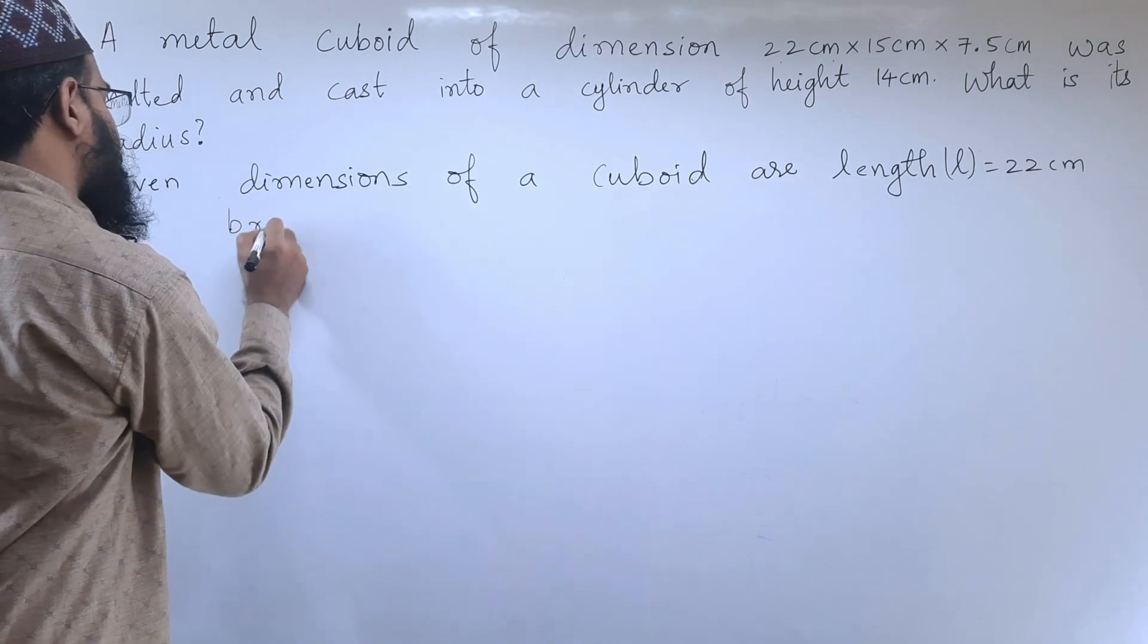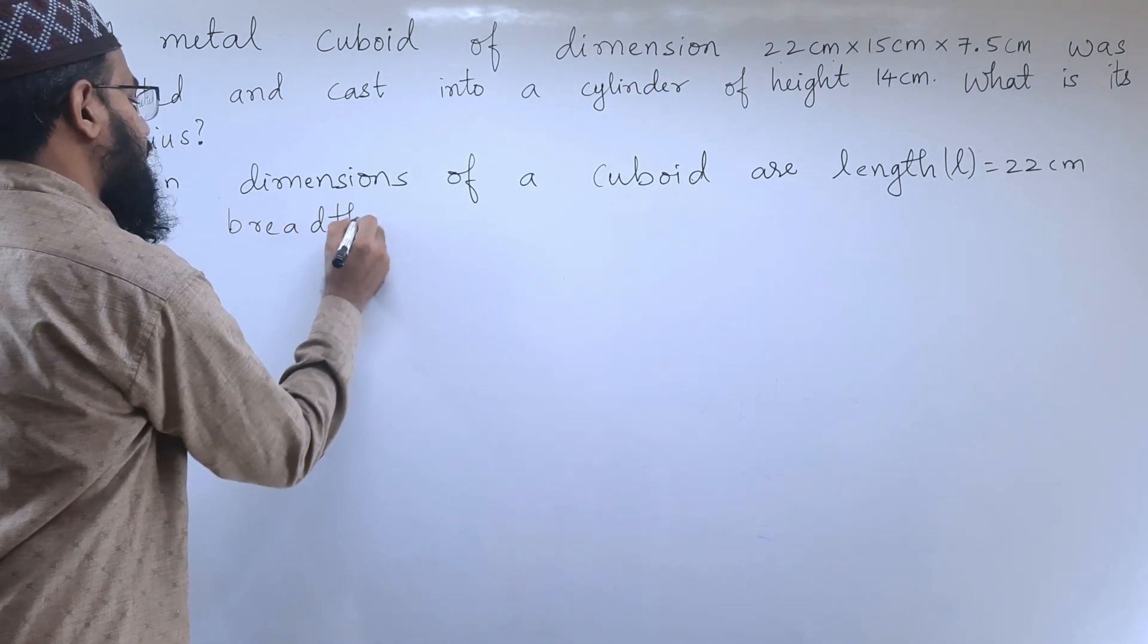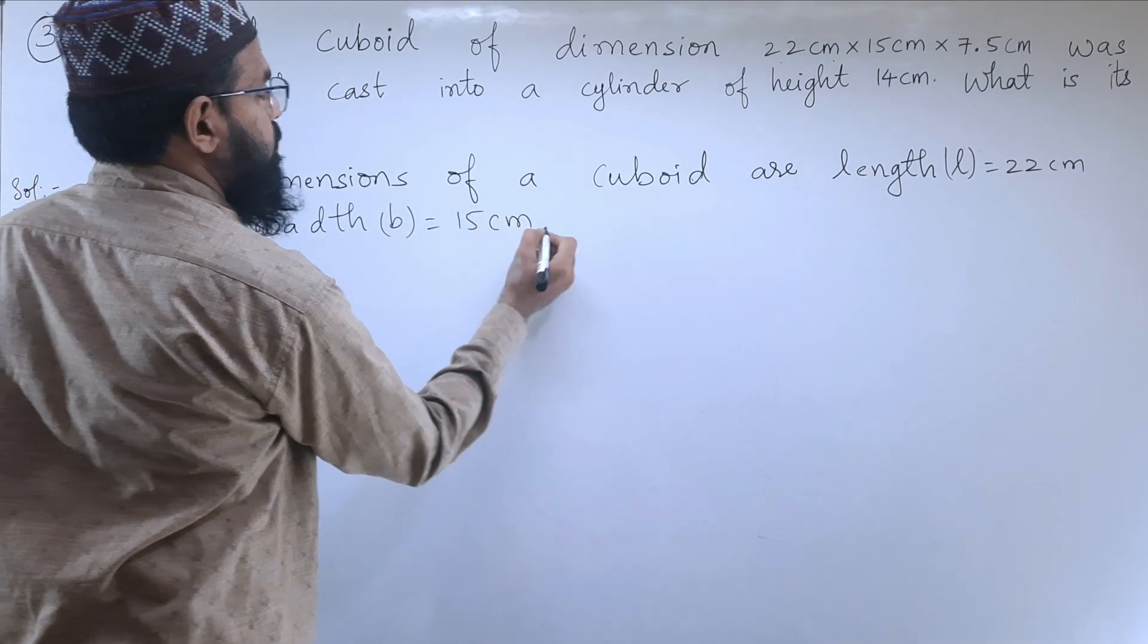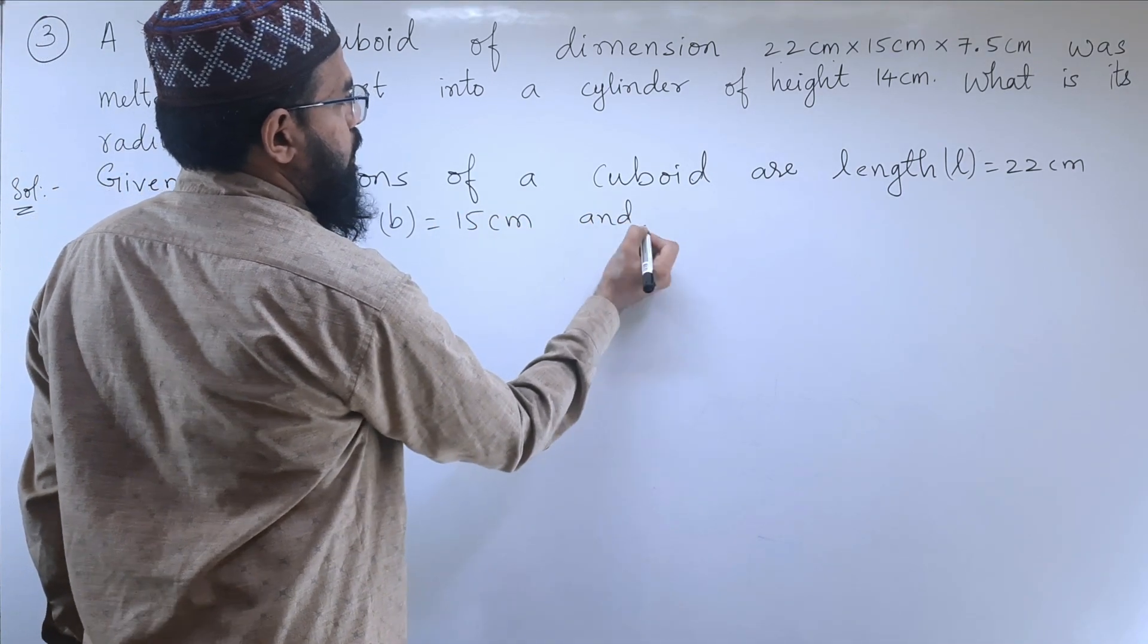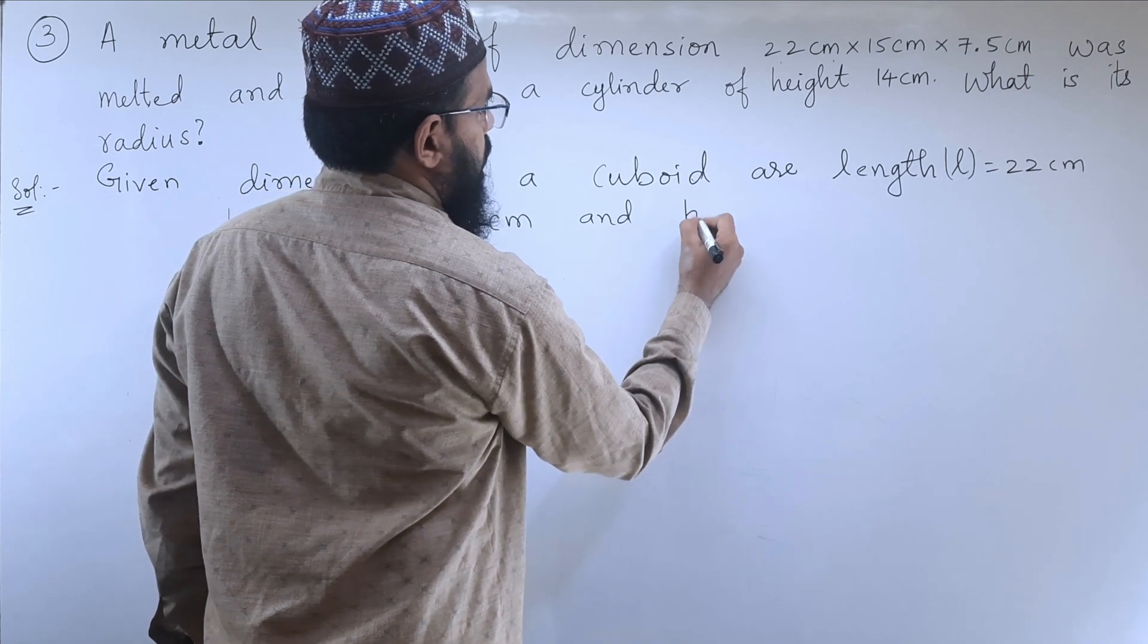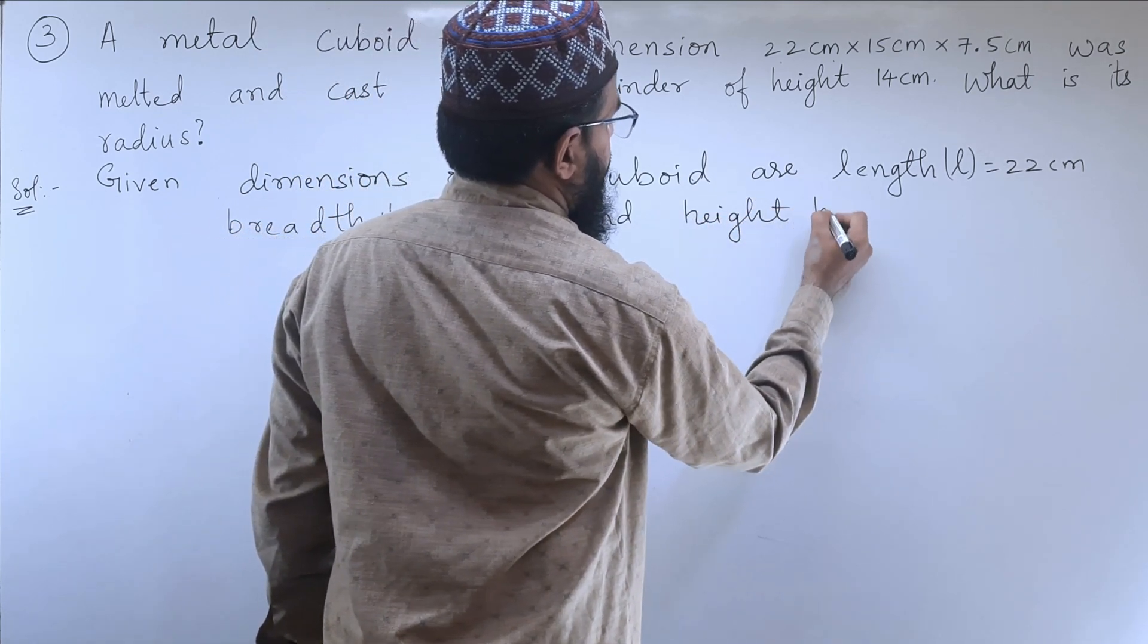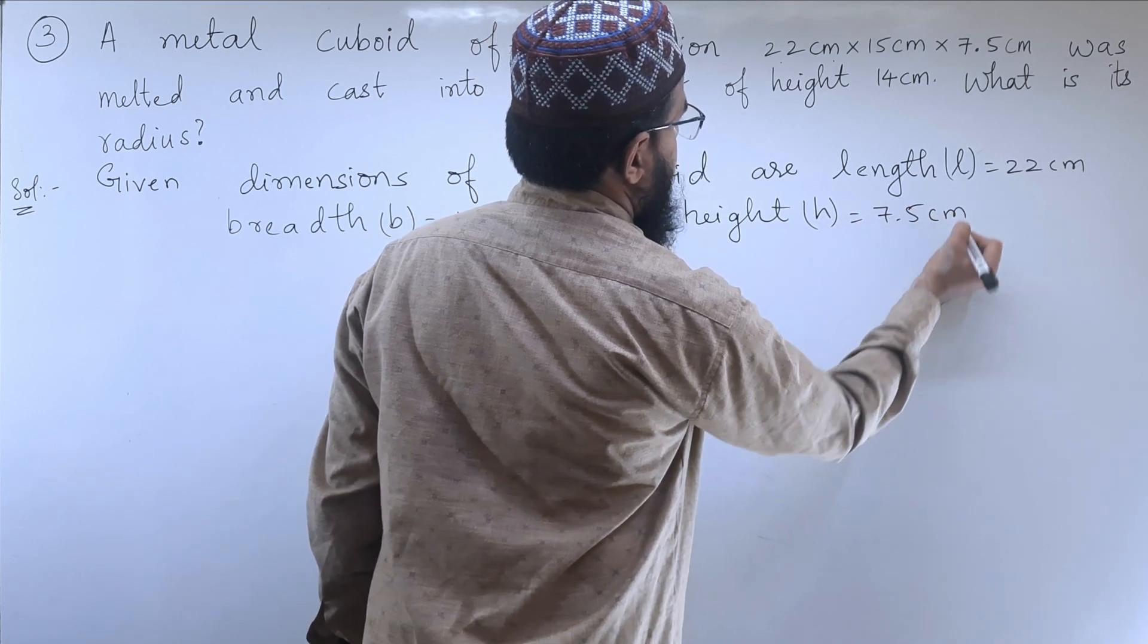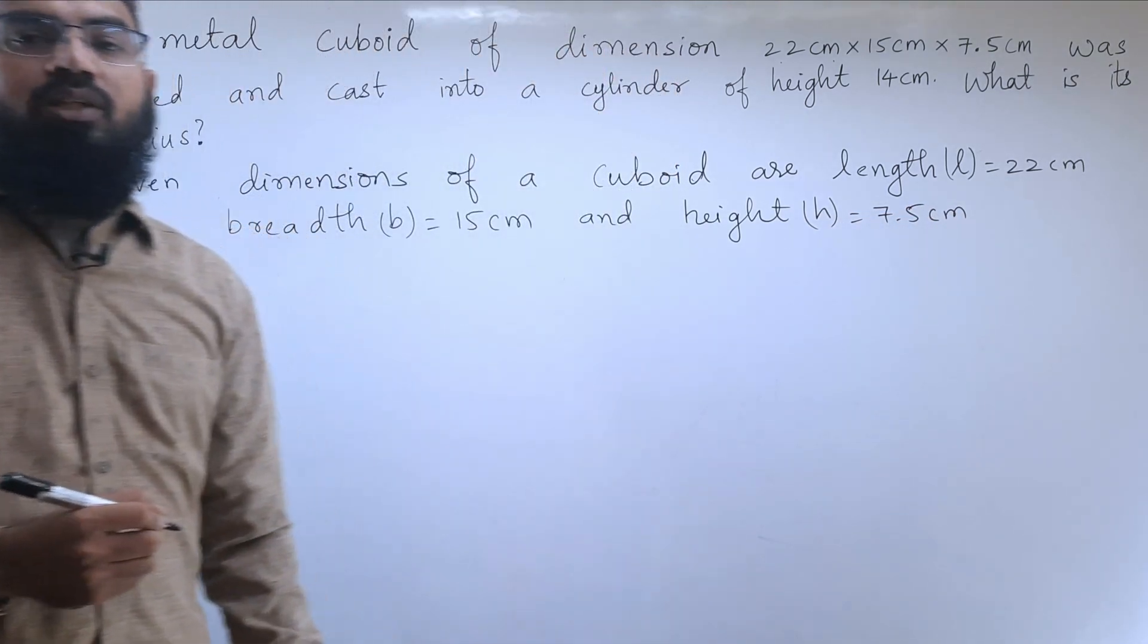Breadth B is equal to 15 centimeter and height of the cuboid H is equal to 7.5 centimeter. These are the dimensions.